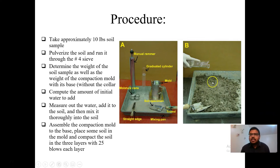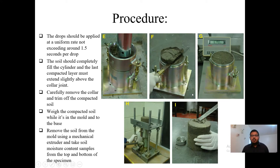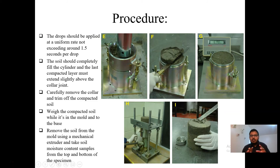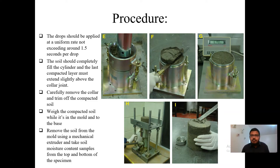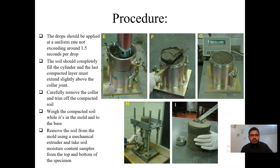After fixing the amount of water, we mix it with the soil thoroughly. We then take the weight of the compaction mold, add the collar, and place the soil in the mold in three layers, applying 25 blows per layer. After compaction, we remove the collar and trim off the extra compacted soil from the top of the mold, then take the weight of the mold with the wet soil.